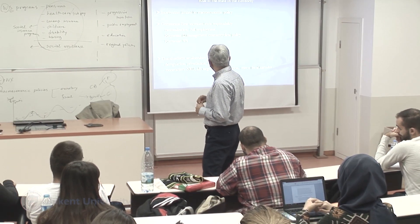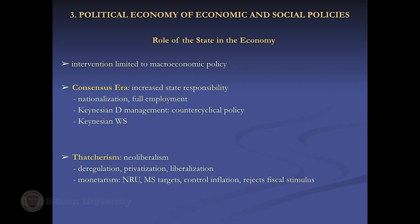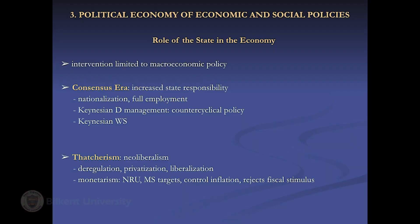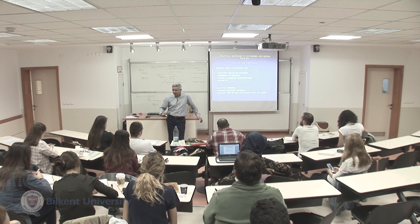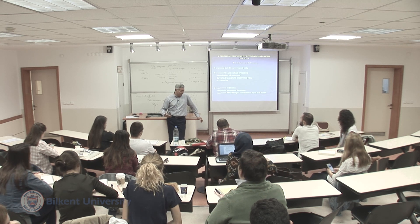So this is how the pendulum switched between collectivism and free markets. The consensus era lasted from the mid-1940s to the mid-1970s — about 25 to 30 years. And these are the sets of policies that came after, with the conservative revolution under Thatcher that emerged in the 1980s.